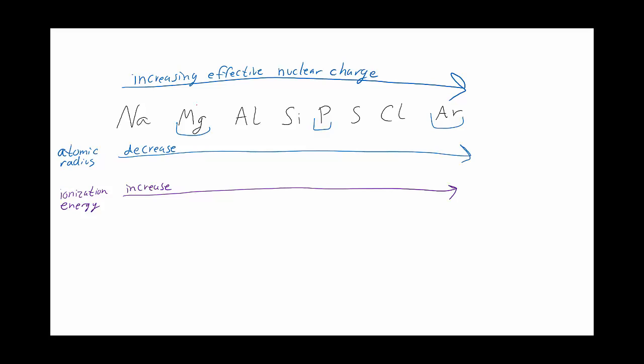So here it's going to take more energy to remove an electron from a fully filled or half filled sub shell, and so magnesium is going to be higher than you would expect, and phosphorus is going to be higher than you expect, and argon is going to be way higher than we expect.